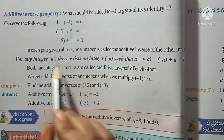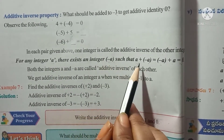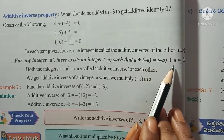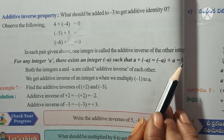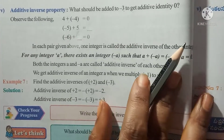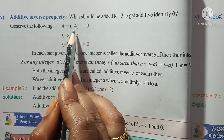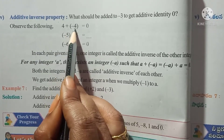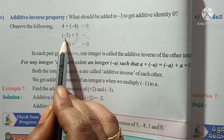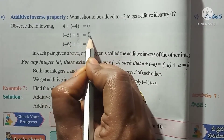So for any integer a, its additive inverse is minus a. When we add a and minus a together, the answer is 0. For example, 4 plus (-4) equals 0, and (-5) plus 5 equals 0.